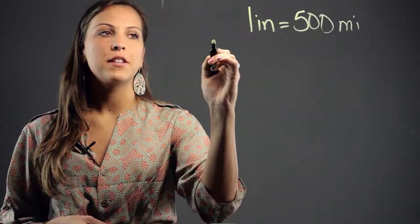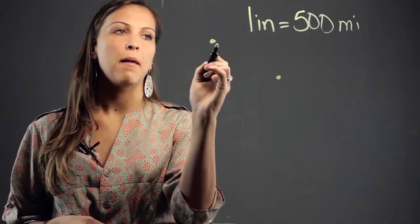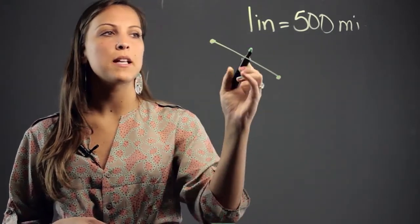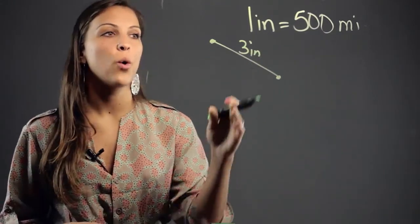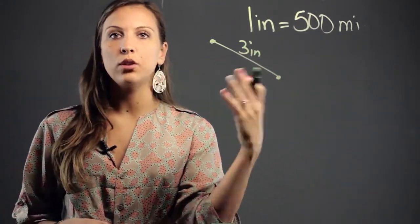So now let's say you measure the distance between two points on a map. Let's say the distance between two cities comes out to be 3 inches. Now you want to know, what is this 3 inches equivalent to in real life?